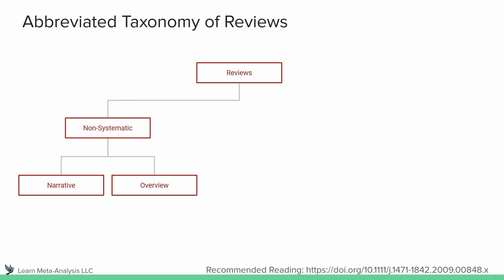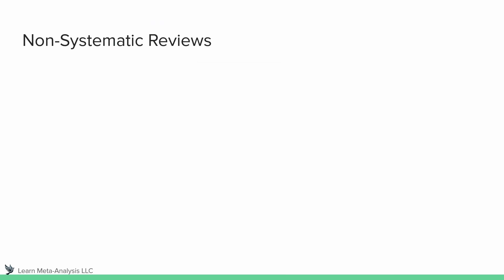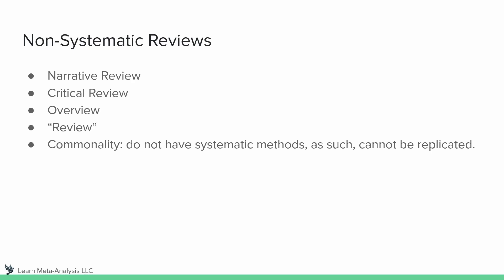Let's take a really brief look at non-systematic reviews. There are many different types — the most common that I've seen are narrative reviews, which don't really have a method section; they're just reviewing what's there. You might also see critical reviews or overviews, which again would not necessarily have a method section. What do these things have in common? They don't have systematic methods, which makes them pretty much impossible to replicate. Anything that cannot be replicated is what I would classify as a non-systematic review.